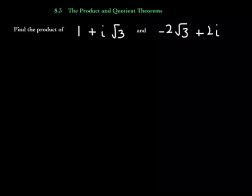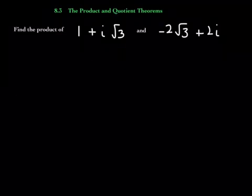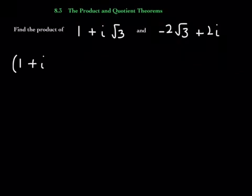All right, everybody. Chapter 8, Section 3: The Product and Quotient Theorems. To get us started, let's find the product of these two complex numbers. I can find the product by using the FOIL method, which is just distributing.